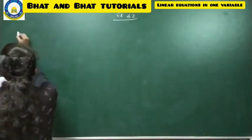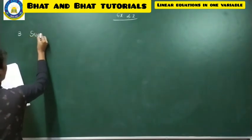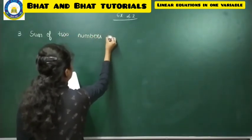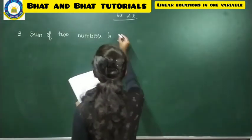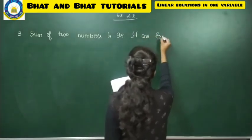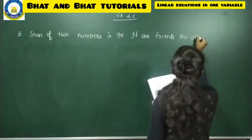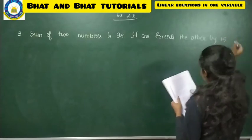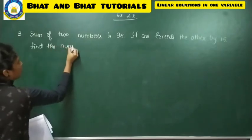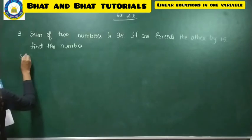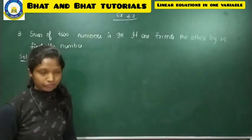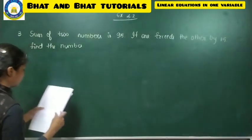The third problem: The sum of two numbers is 95. If one exceeds the other by 15, find the numbers. The sum of two numbers means if you add two numbers the result is 95, and one number exceeds the other by 15. We need to find both numbers.